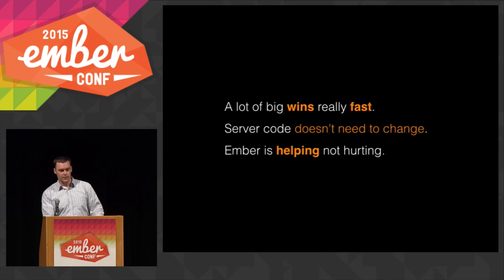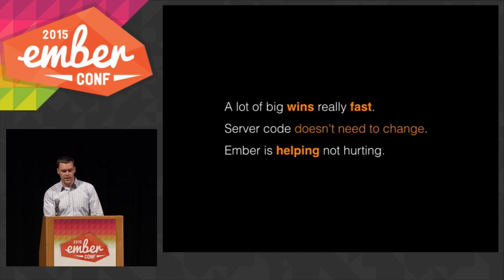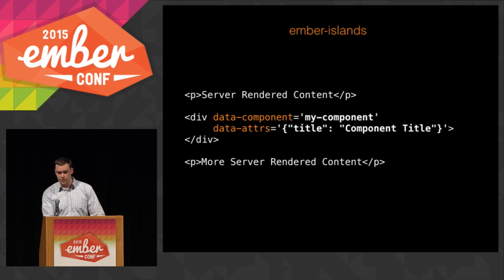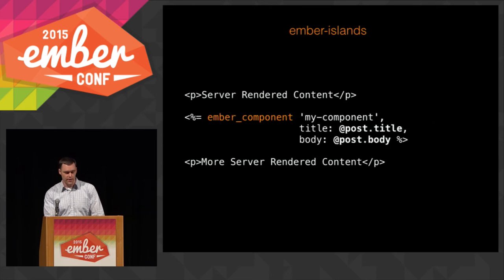This gives you some wins really fast. Your server code doesn't need to change very much, and Ember is helping right away instead of slowing you down. Here's how this library works: you just make an element, give it a data-component attribute with the name of your component, and give it data attributes which is just JSON for that component to be rendered. I also dropped a Rails helper in the readme which will show you how to make a very small Rails helper to do the same thing.